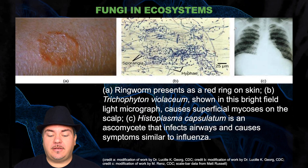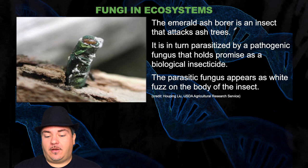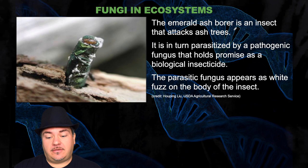Humans can also be infected by fungi. For example, ringworm presents as a red ring on the skin, or you can have superficial mycoses on the scalp. There's also an ascomycete that infects airways and causes symptoms similar to the flu. Some fungi are parasites of other animals — for example, the ash borer is an insect that attacks ash trees. However, the ash borer is in turn parasitized by a pathogenic fungus, which holds promise as a biological insecticide, as we can intentionally infect ash borers to prevent them from killing trees.